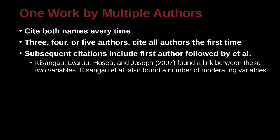Here is an example. In this case, we have one author, two authors, three authors, and four. Pay attention to the comma, with an 'and' conjunction at the end. This is very important — you must follow this style. These are the last names, the family names of the authors. So we have one, two, three, four authors here, and this paper is from 2007.